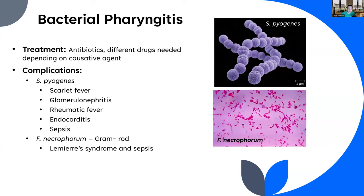Fusobacterium has an entirely different complication called Lemierre's syndrome. Your body produces a strong immune response to Fusobacterium, resulting in antibody-antigen complexes that can clog up blood vessels and cause stroke-like symptoms. Fusobacterium can also cause sepsis.